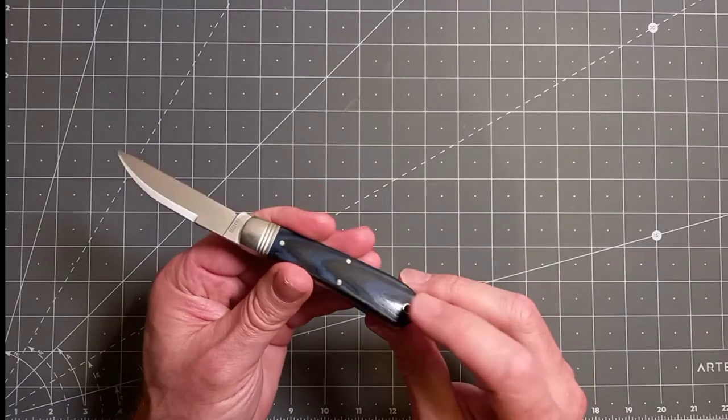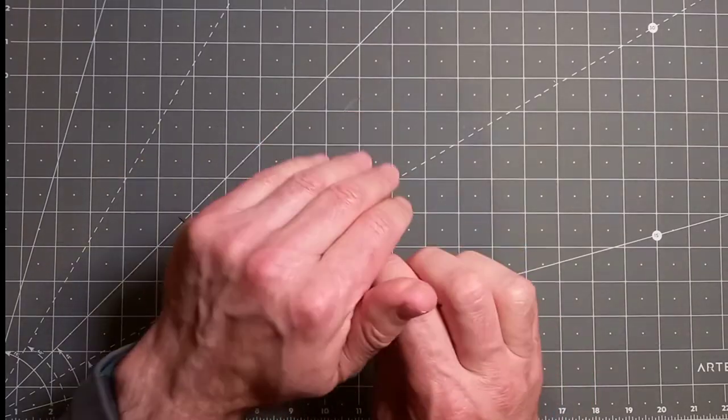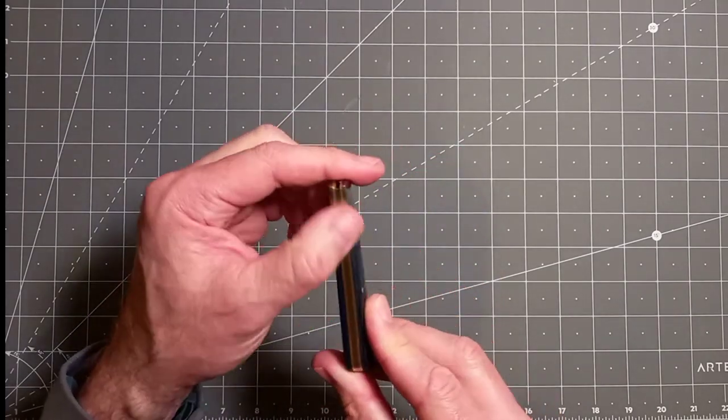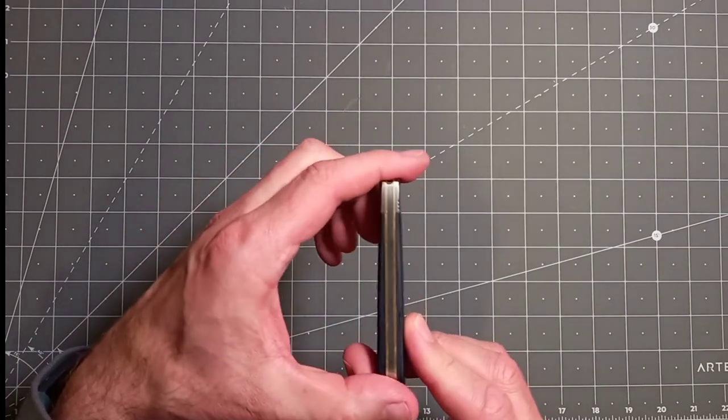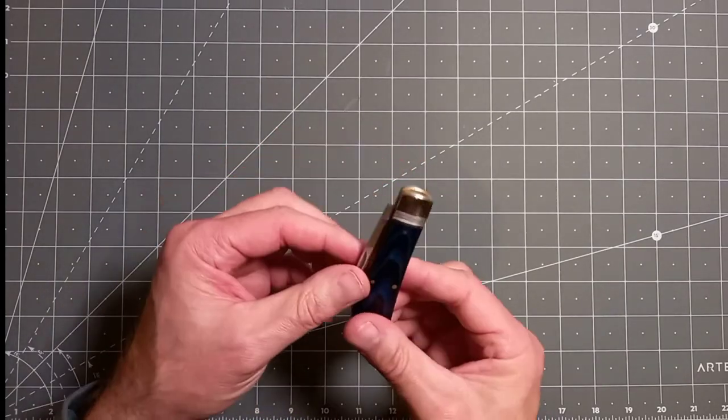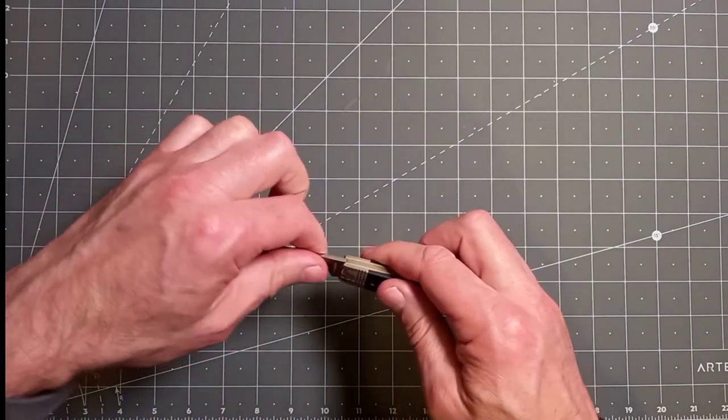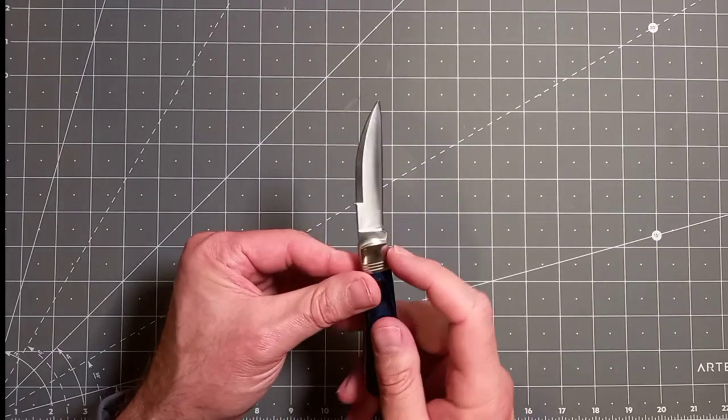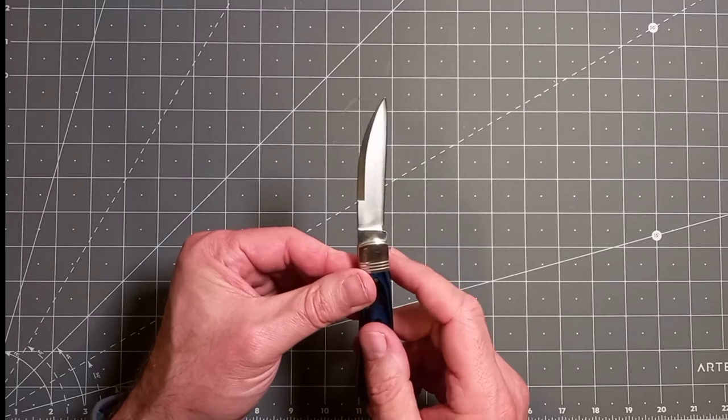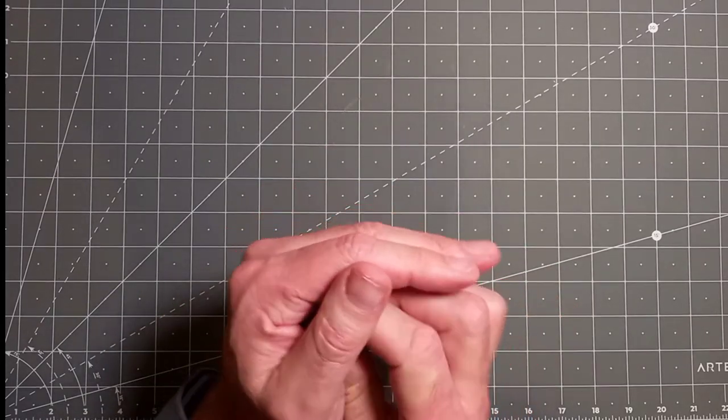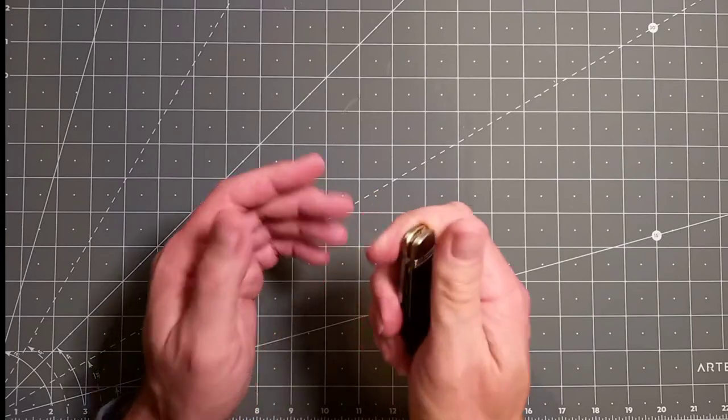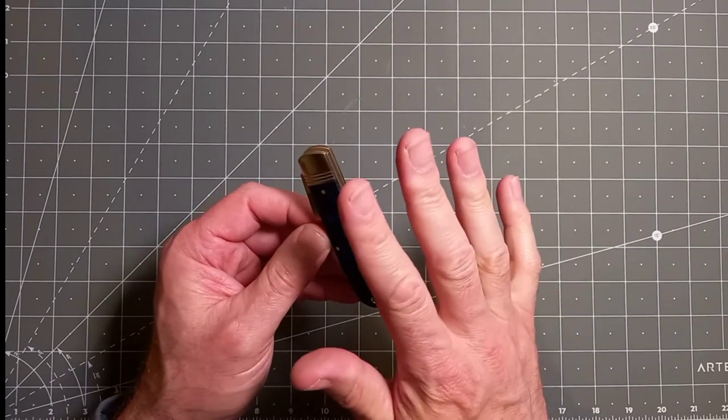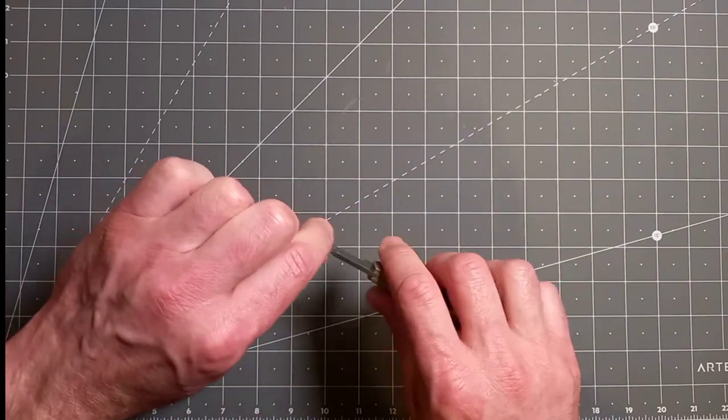The lanyard hole is nicely done, no chips or nothing like that. The actual fit and finish overall is very good. Good half thing over the backspring, I'm pretty impressed. Nice deep nail nick. I like the Rough Rider stamp on the tang rather than the bolster. The model number is just simple and stylish, not overbearing. The fit and finish I'll give this a very good, nearly excellent. It's that good. Remember the price point, it's quite cheap.